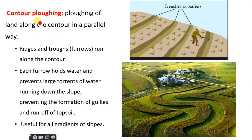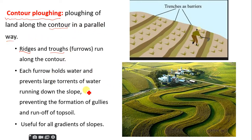In the case of contour plowing, there are two key words you need to know: ridges and troughs. Plowing of land follows the contours in a parallel way. In contour plowing you have ridges and troughs — troughs here are referred to as furrows. It's like creating an alternative path for water to move instead of moving straight downwards — you construct mini-channels with levees.